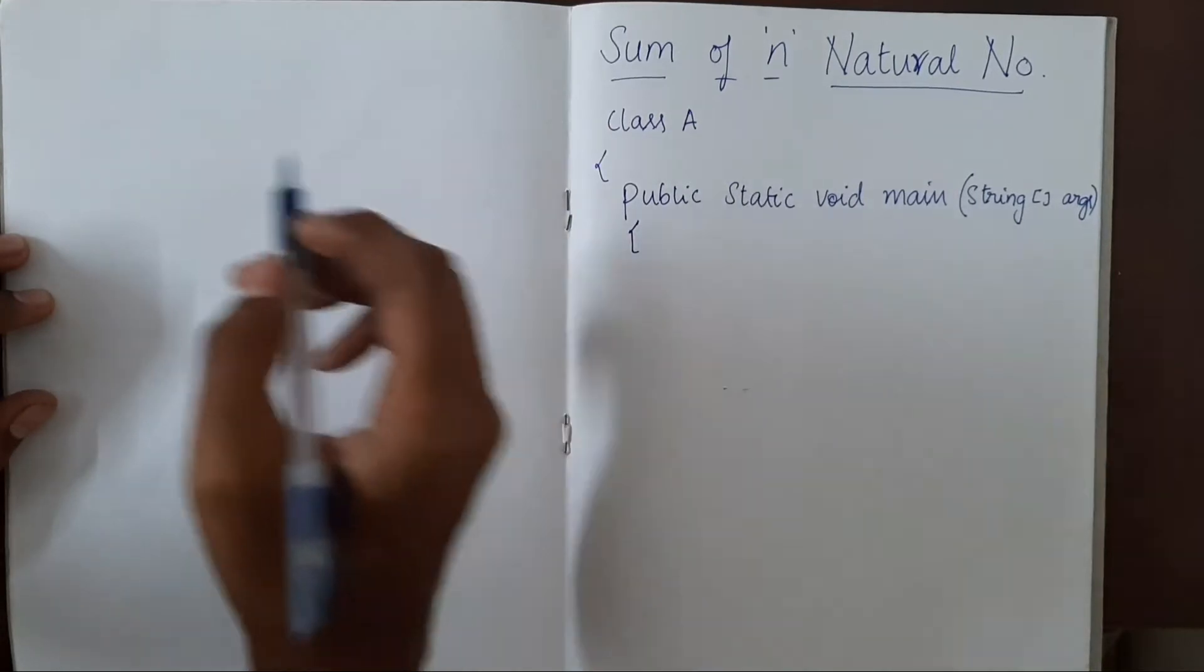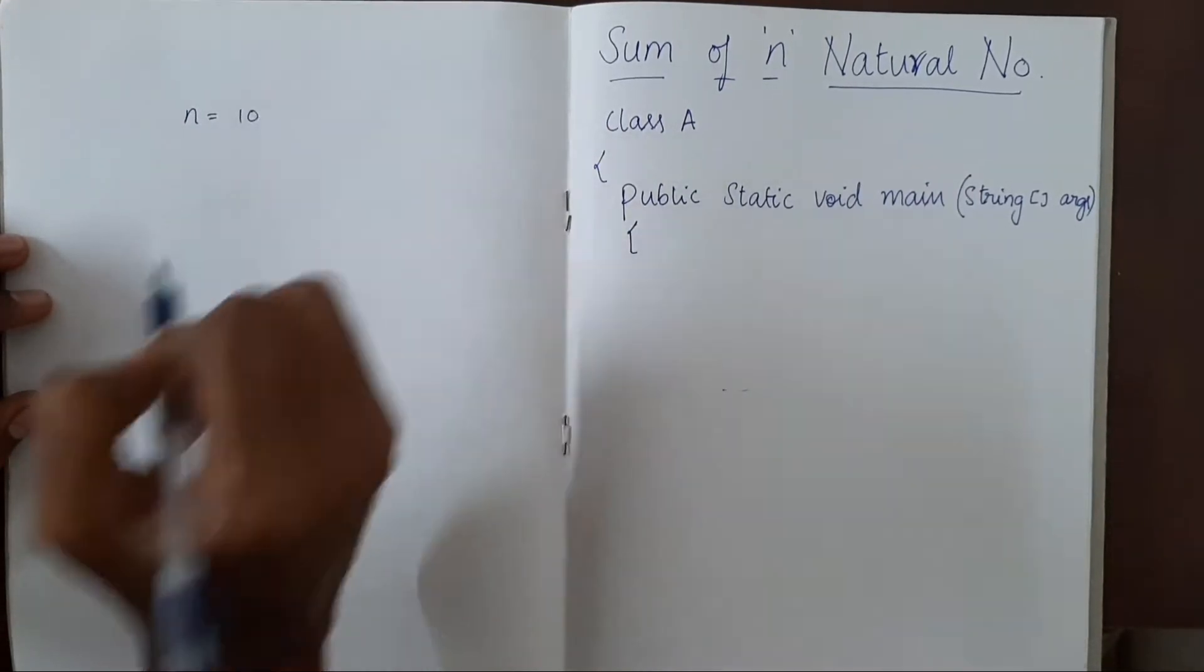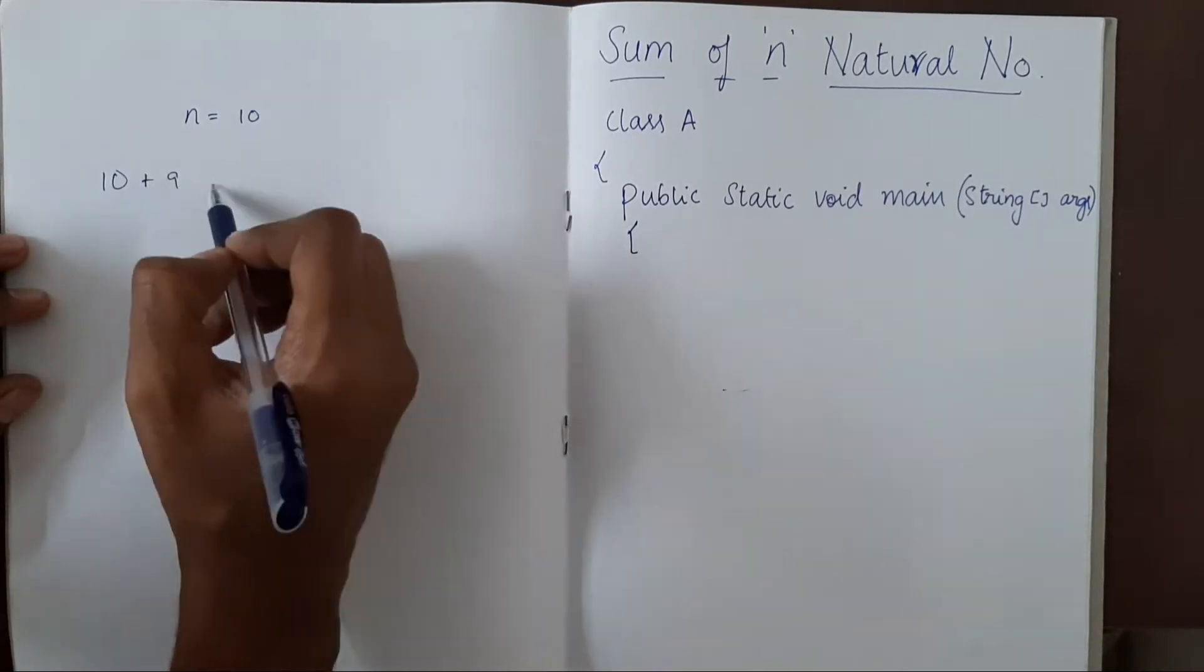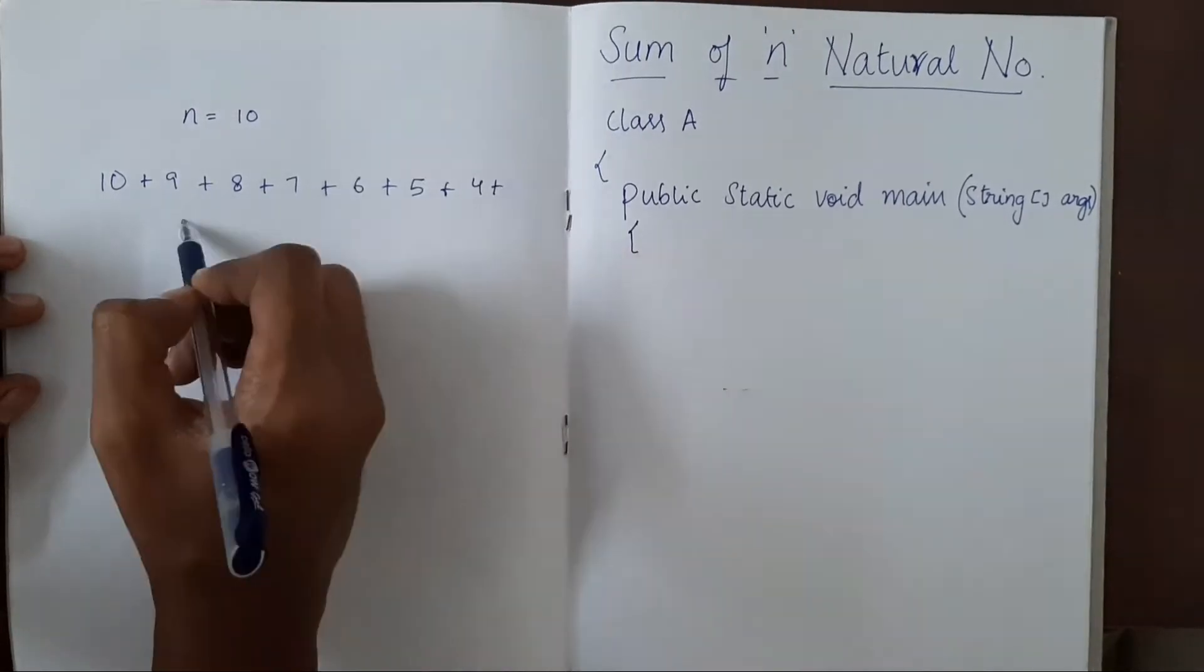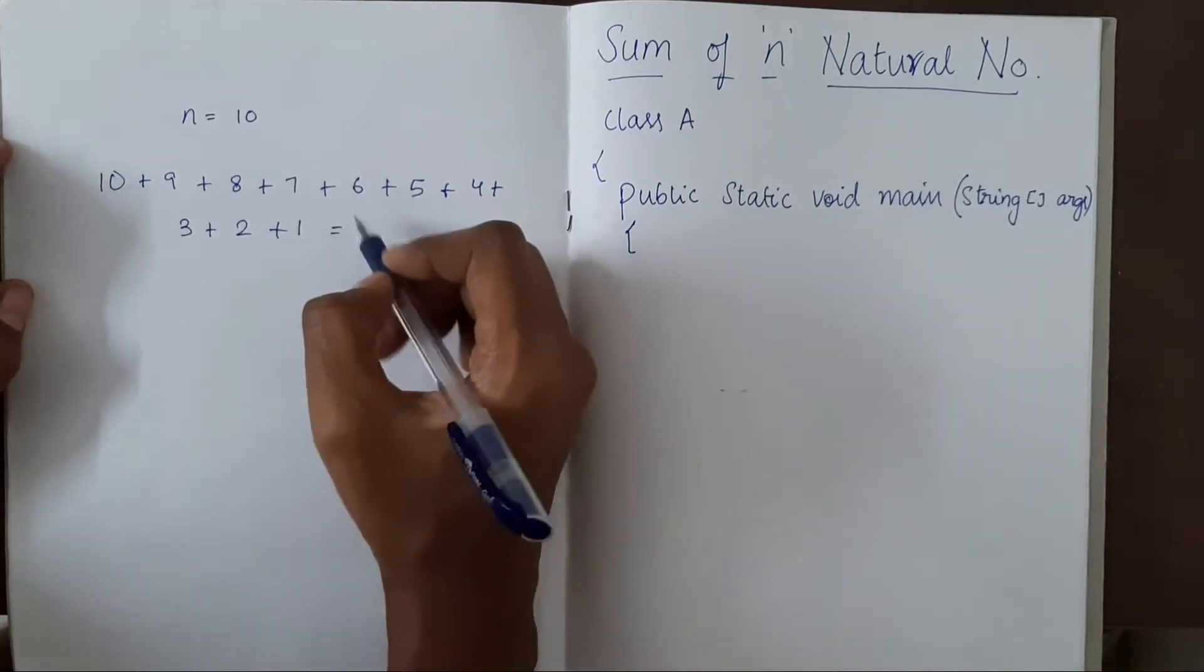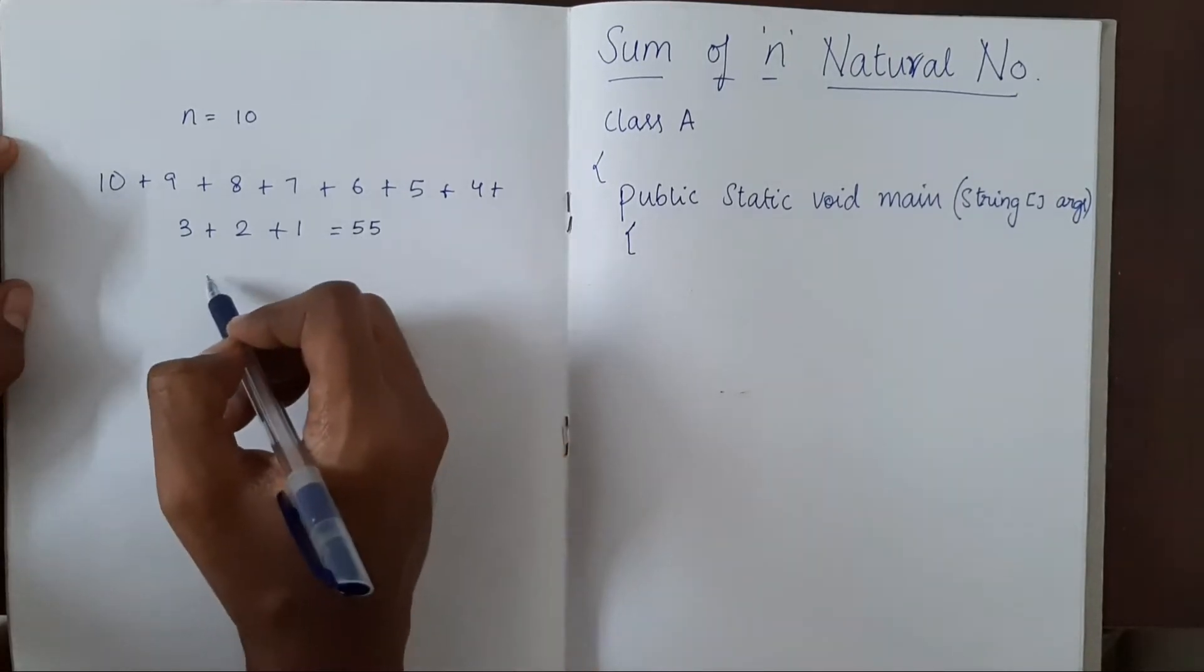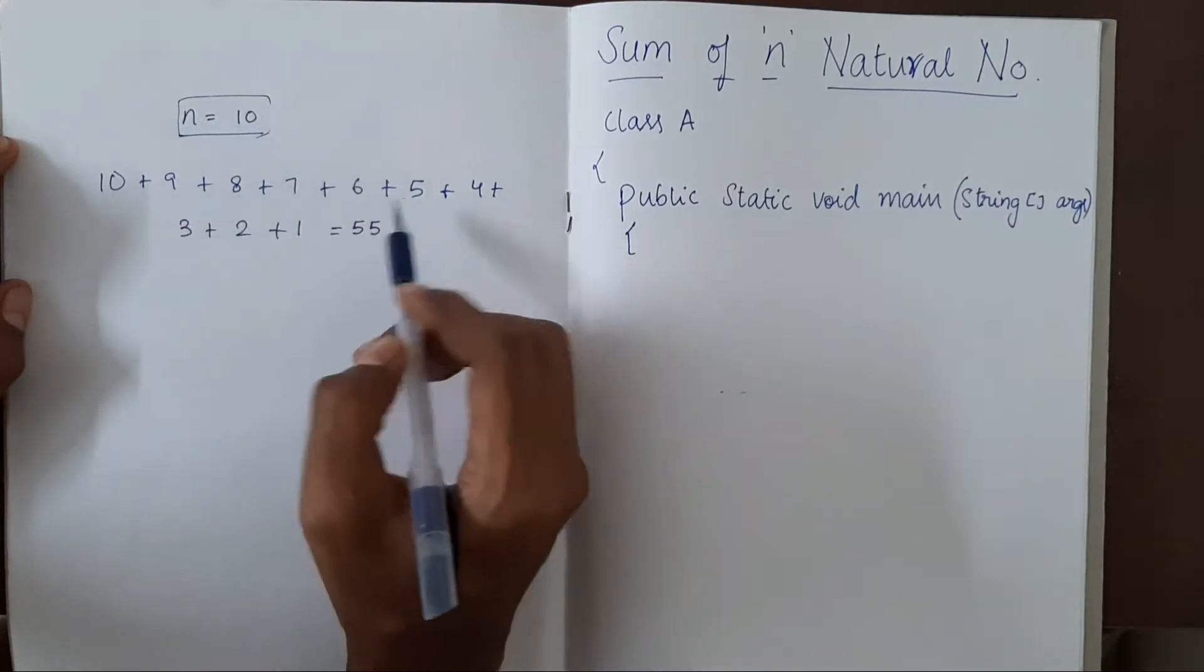So what is sum of n natural numbers? If n is given as 10, we have to find the sum of 10 plus 9 plus 8 plus 7 plus all the way down. This is sum of n numbers. That would be 55. So sum of first 10 natural numbers is 55.